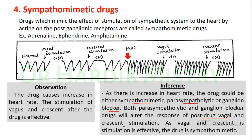Inference: since heart rate is increased, the drug could be sympathomimetic, parasympatholytic, or a ganglion blocker. However, parasympatholytic drugs render both vagal and crescent stimulation ineffective, and ganglion blockers render vagal stimulation ineffective but preserve crescent. Since both vagal and crescent stimulations remain effective, the drug is sympathomimetic — it simply mimics sympathetic supply without blocking parasympathetic pathways. This includes adrenaline, ephedrine, and amphetamine.